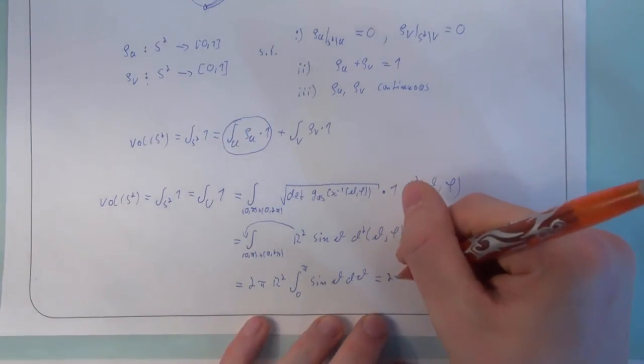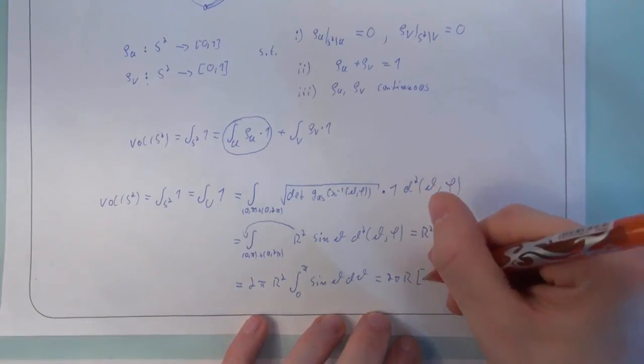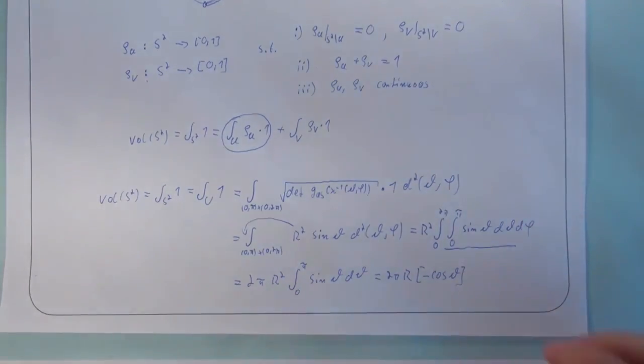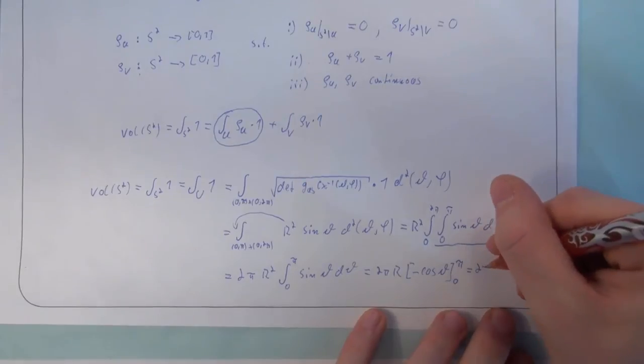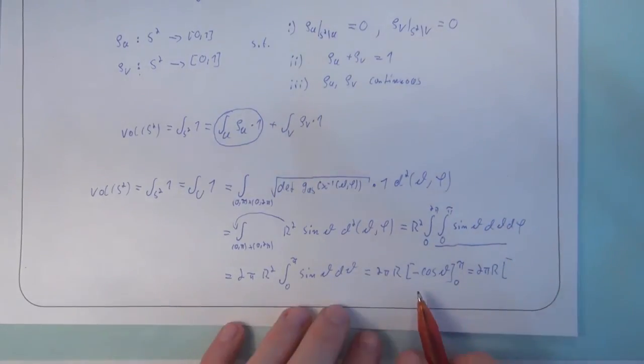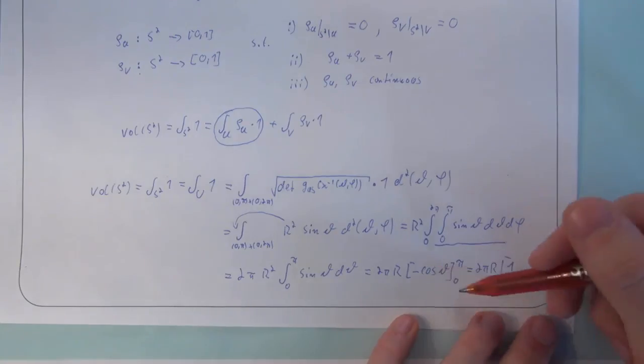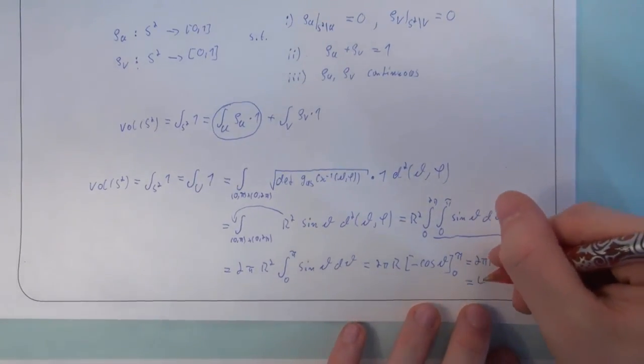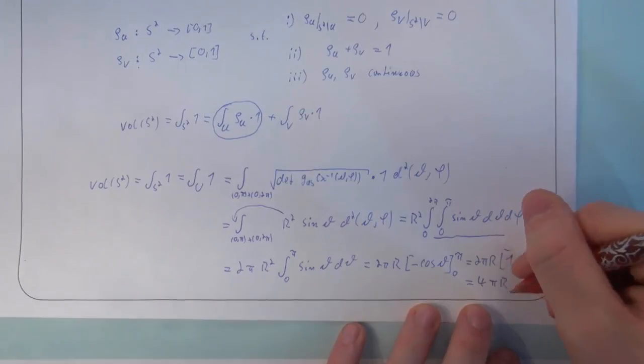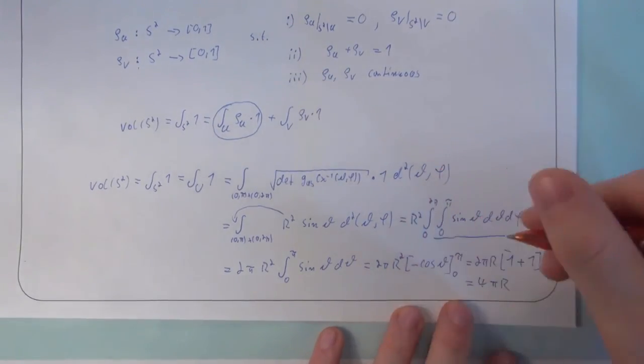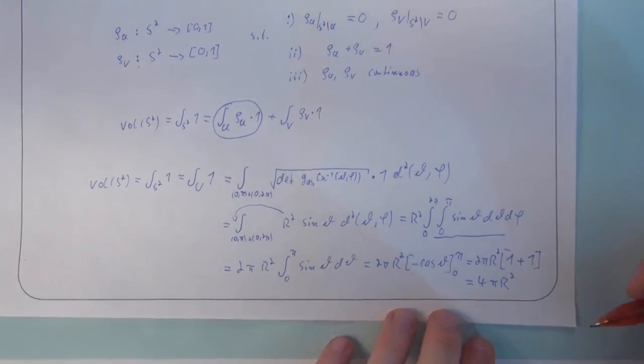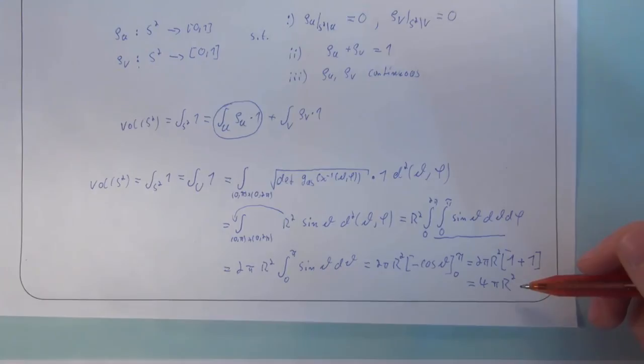Of course, this is the function minus cos theta, and we have to evaluate at 0 and pi. We have 2 pi r squared, minus cos pi is 1, and minus cos 0 is also minus 1. So, in the end we get 4 pi r squared. Of course, this is the formula for the surface of a sphere with radius r you already know from elementary school.